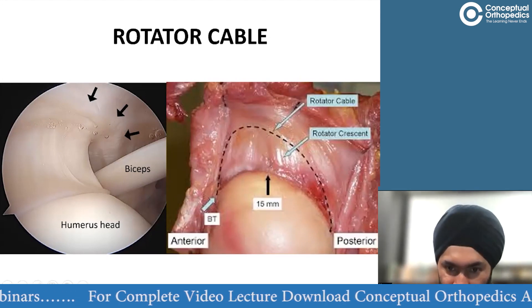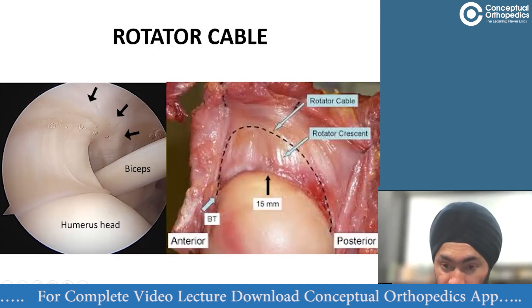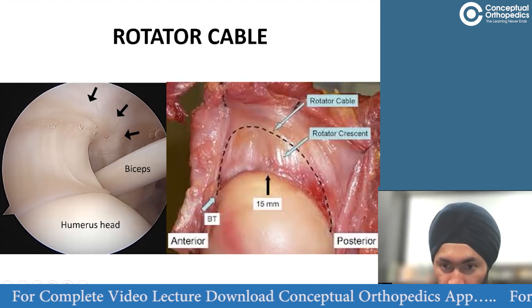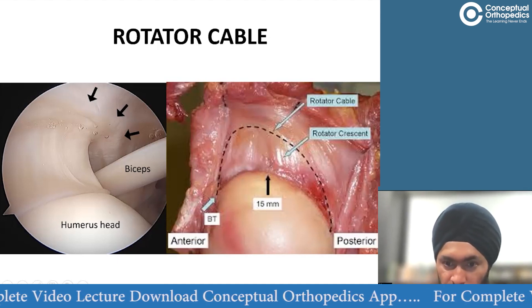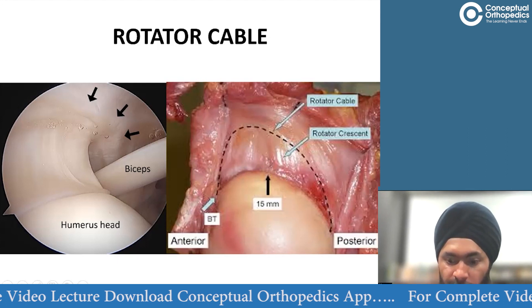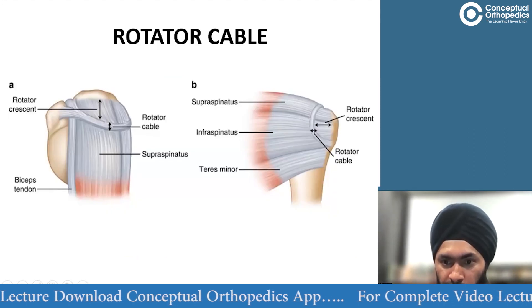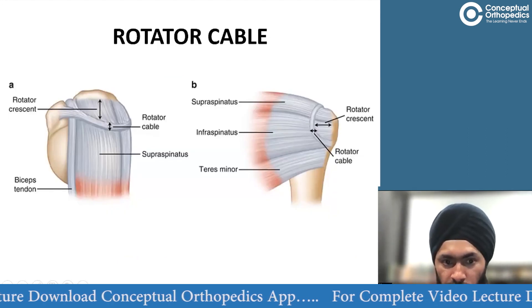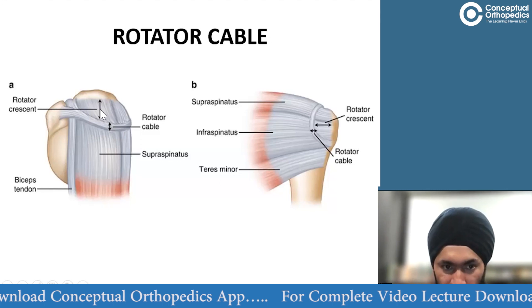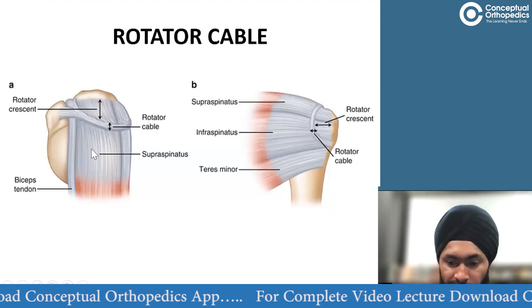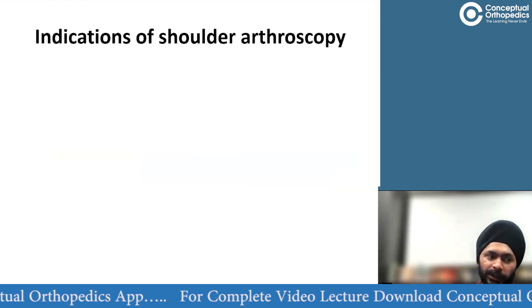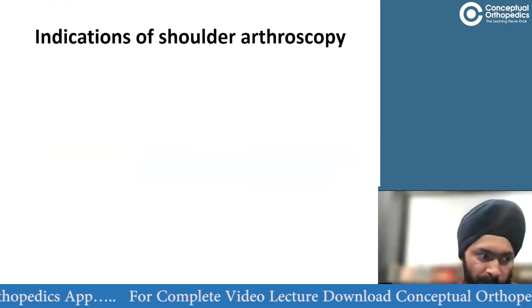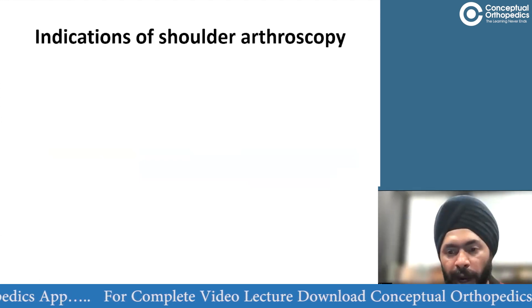The area of rotator cuff distal to the rotator cable is called the rotator crescent. So the rotator cable is the thickened arc, and the rotator crescent is the area distal to it. That's an overview of the relevant anatomy.